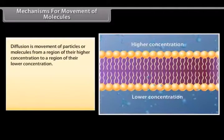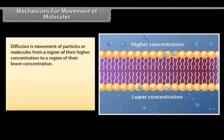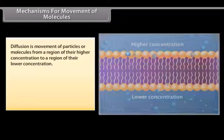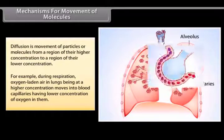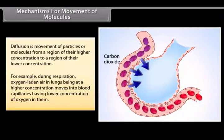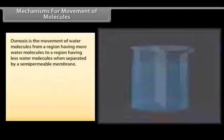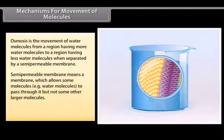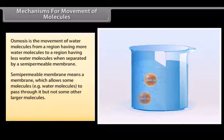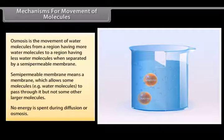Diffusion is movement of particles or molecules from a region of their higher concentration to a region of their lower concentration. For example, during respiration, oxygen laden air in lungs being at a higher concentration moves into blood capillaries having lower concentration of oxygen in them. Osmosis is the movement of water molecules from a region having more water molecules to a region having less water molecules when separated by a semi-permeable membrane. Semi-permeable membrane means a membrane which allows some molecules, that is, water molecules, to pass through it but not some other larger molecules.